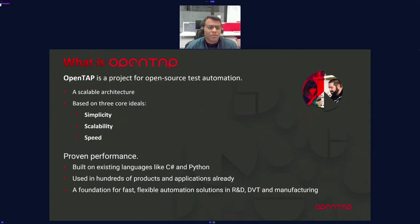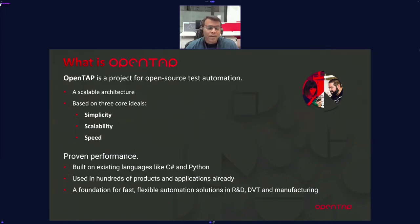So what is OpenTap? Briefly, OpenTap is an open-source test automation and test sequencer project. The main aim is to build a scalable test sequencer based on three core ideals: simplicity, scalability, and speed. This applies from your development phase all the way to production, because time to market is very important. OpenTap itself is built on top of C#.